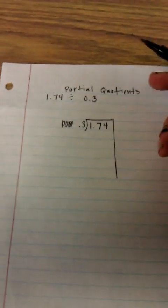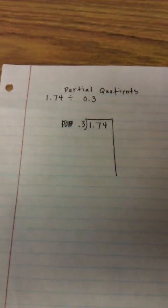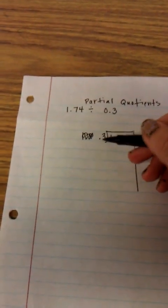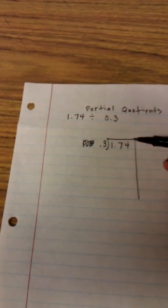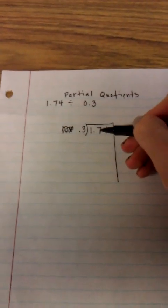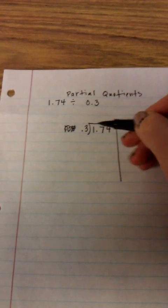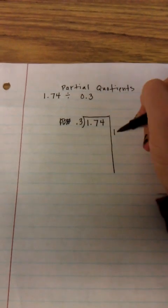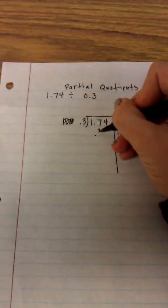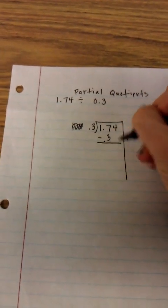So the first thing I'm going to ask myself, I always say start with very easy numbers. Do I have at least one group of 3 tenths in 1 and 74 hundredths? Well, yes, I know I have at least one, because I see here I have 7 tenths, so of course I have at least 3. So I'm going to multiply by 1, because that's nice and easy. So 1 times 3 tenths is 3 tenths, and I subtract.